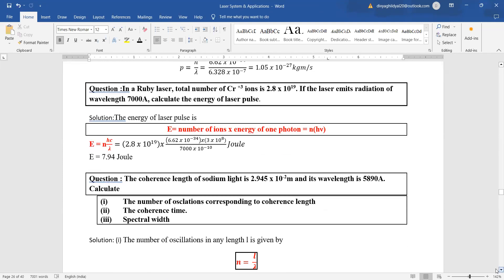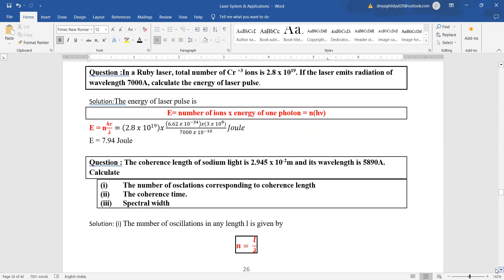In ruby laser, total number of chromium ions is given as 2.8 times 10 to the power 19. If the laser emits radiation of wavelength 7000 angstrom, calculate the energy of laser pulse. Energy is given by number of ions into energy of one photon, which is n h c by lambda. Putting the different values, we get the answer.